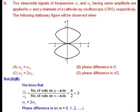Question number 9: Two sinusoidal signals of frequencies omega x and omega y having same amplitude are applied to x and y channels of CRO respectively. The following stationary figure will be observed when.